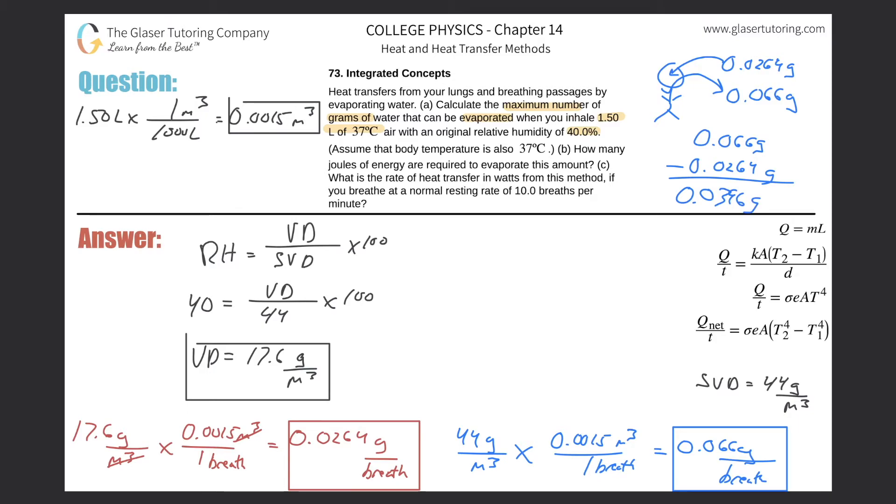This is, ladies and gentlemen, the maximum amount that you can add to the air. Not the maximum that's allowed in the air. This is the max allowed in the air. But the maximum amount that you are allowed to add to the air, meaning to evaporate into the air if you breathe in 0.0264 grams, would be this number. That's letter A.